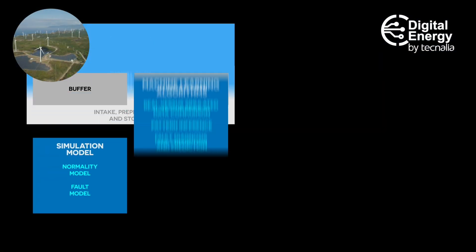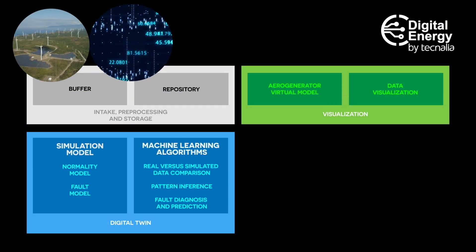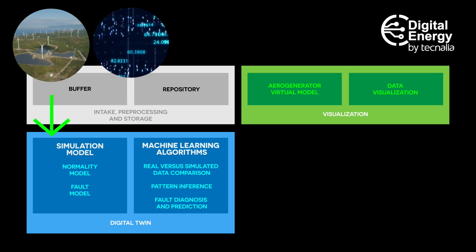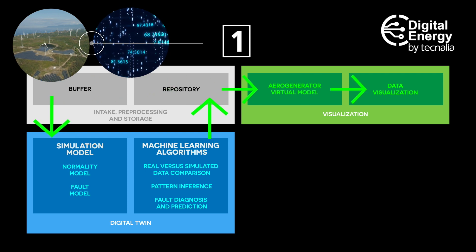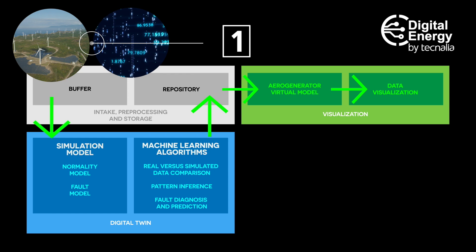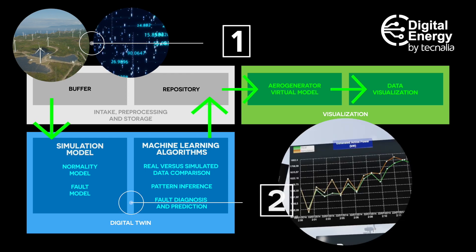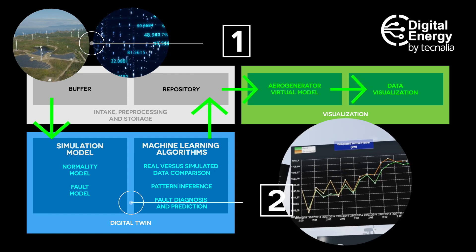The developed digital twin is highly adaptable and interoperable and seamlessly integrates in a standard architecture formed of three main modules. First of all, a data acquisition module that allows the ingestion, pre-processing and storage of real-time data coming from sensors and IoT platforms.